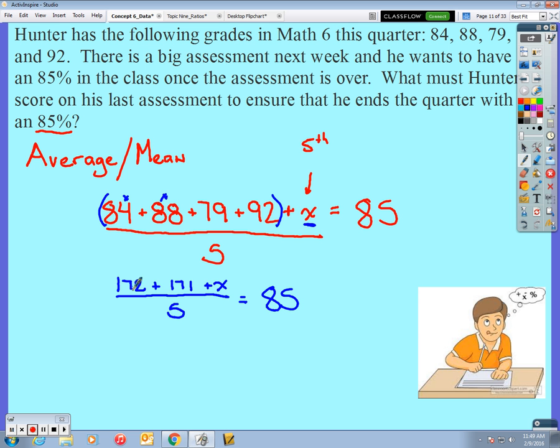Now let's combine like terms up top. So we can combine 172 and 171, and I think that gives us 343 plus X divided by 5 equals 85.